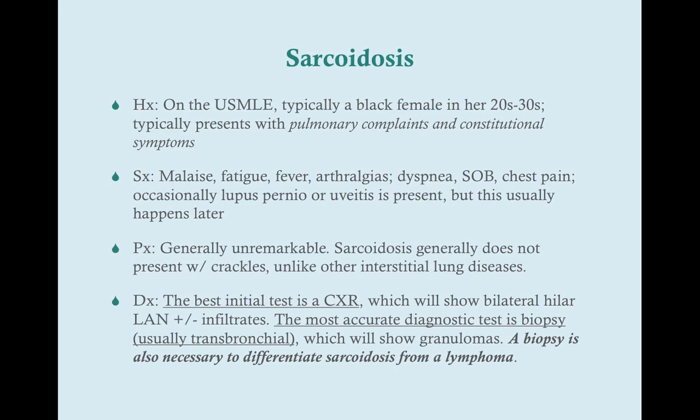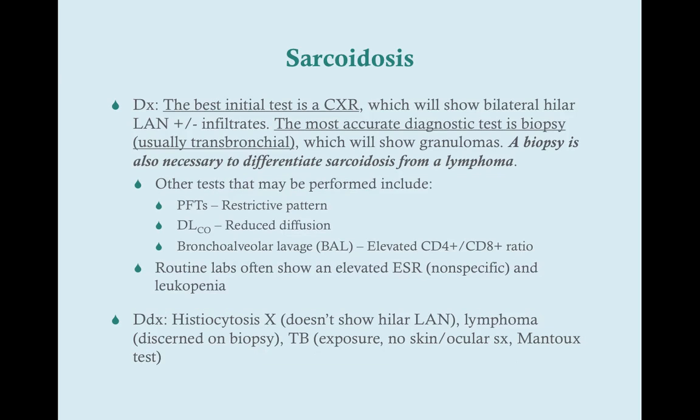A biopsy is also going to be necessary to differentiate sarcoidosis from lymphoma. So even if the patient has lupus pernio and we are 99% certain this patient has sarcoidosis because they have this pathognomonic sign, you're still going to need to get a biopsy to definitively differentiate sarcoidosis from lymphoma. So to summarize: best initial test is a chest x-ray, most accurate test is a biopsy. Other tests like pulmonary function tests are generally performed but aren't the best initial or most accurate diagnostic test, so you're probably not going to see them come up as an answer on the USMLE.